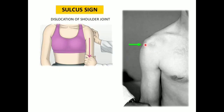When you pull downwards, a depression — a sulcus — can be formed, and it becomes more prominent. This is because normally the head of the humerus and soft tissue structures fill this space; once dislocation occurs, these structures displace downwards and forwards, making the sulcus more prominent upon traction. A positive sulcus sign is an indication of glenohumeral dislocation.